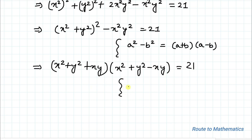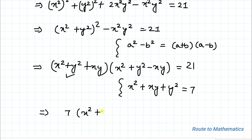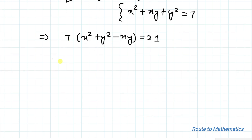From the second equation we have x² + xy + y² = 7. Substituting this value, we have 7 × (x² + y² - xy) = 21. By cross multiplication, x² + y² - xy = 3. Let's take this as equation 3.